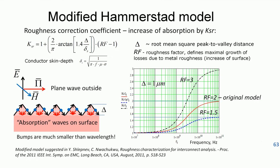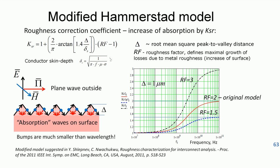Let's get started and take a look at the modified Heimerstadt model. It's a two-parameter model. One parameter is delta, which is root mean square peak-to-valley distance. It may be considered as a simple parameter. Another parameter is the roughness factor, which defines the maximal growth of losses due to metal roughness. The model was suggested in the 1970s by Heimerstadt and Jensen.